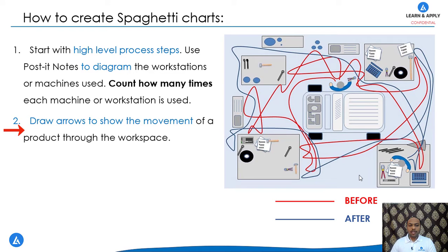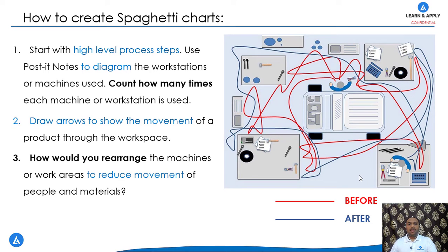In second step, we draw the arrows to show the movement of the product through the workspace. In third and last step, we are going to brainstorm how we can rearrange the machines or work areas so that we can reduce the movement of the people and materials. This is a very important exercise and we are going to eliminate the majority of the waste from the processes.